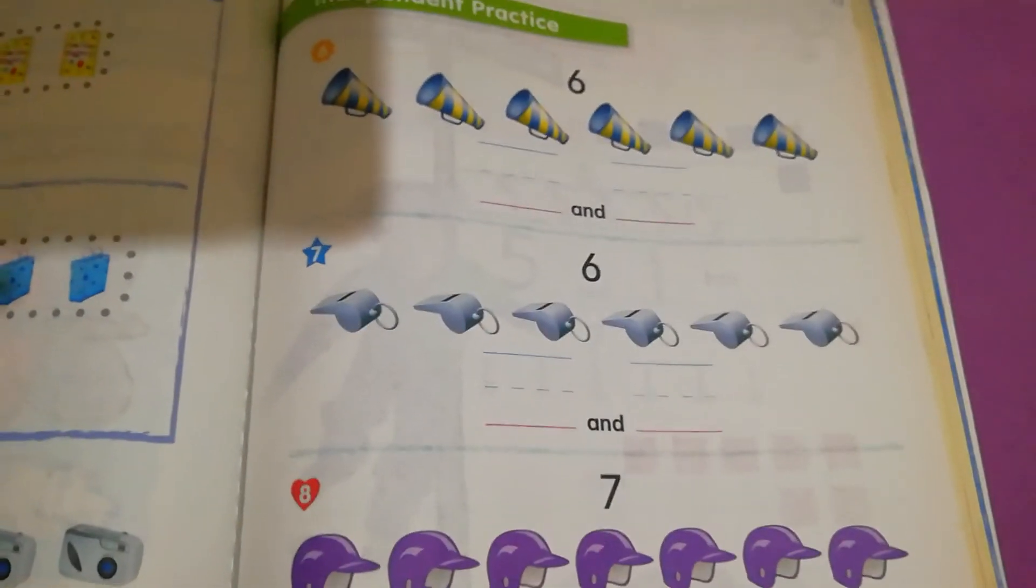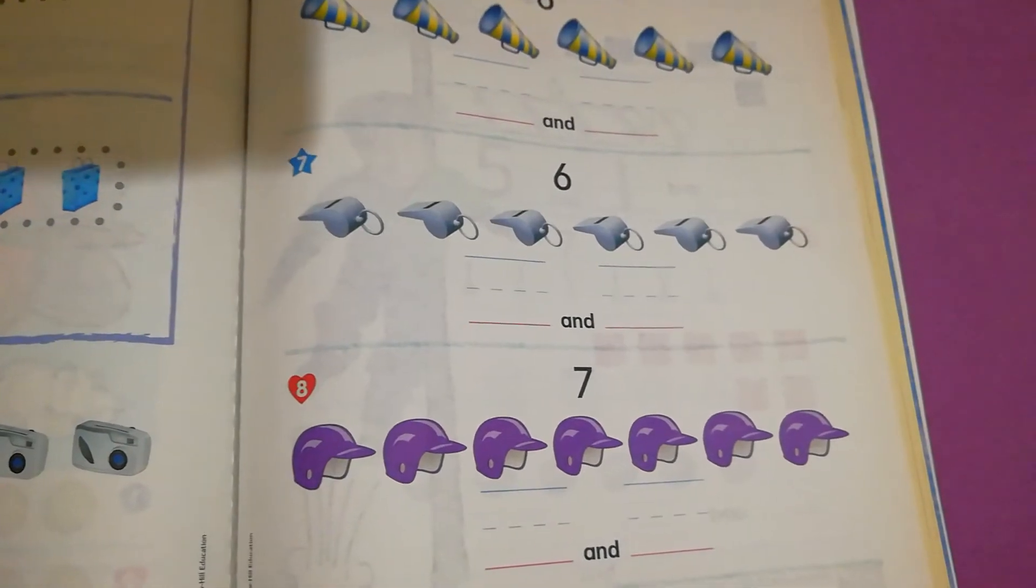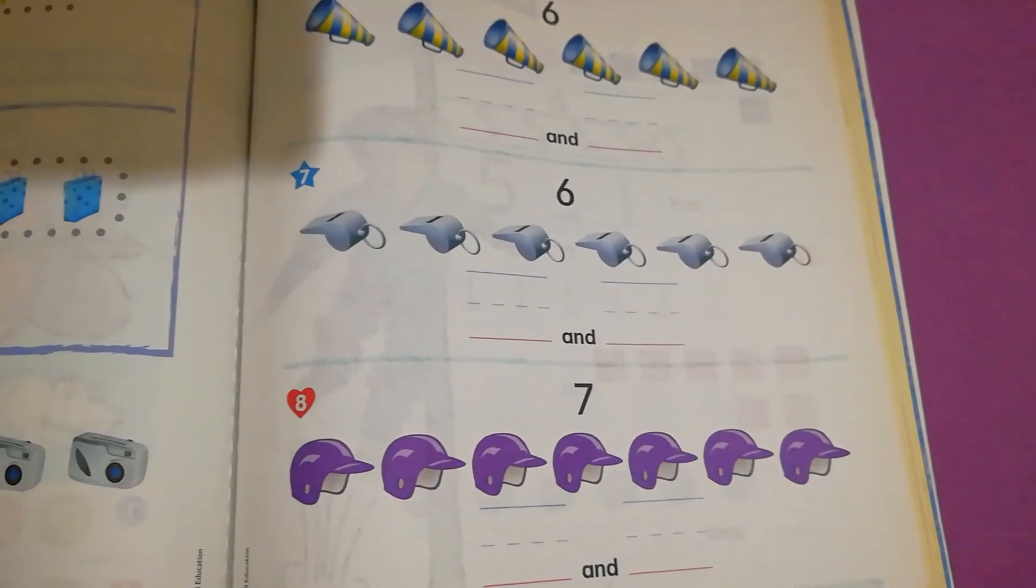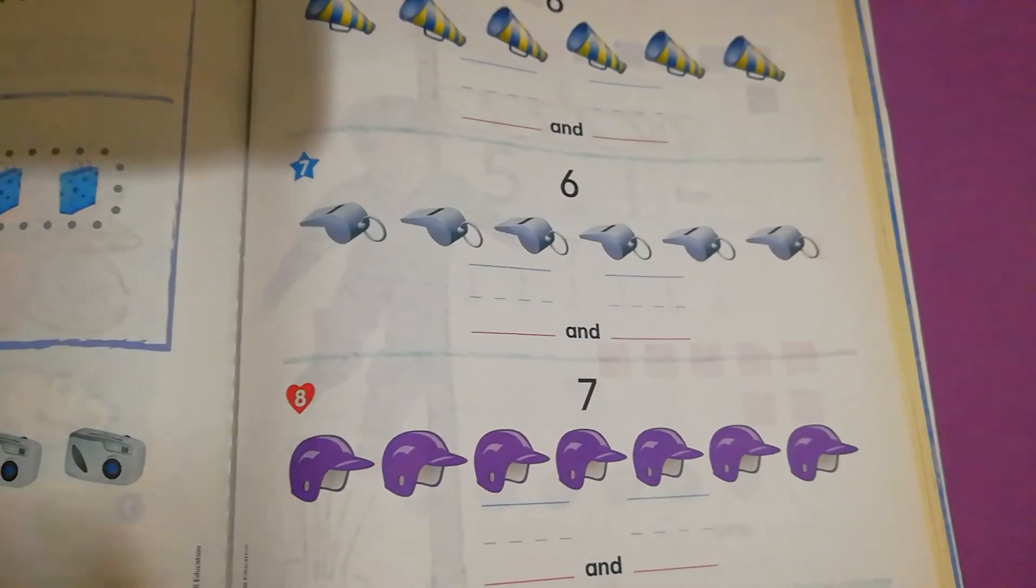Now here, six and seven. This page follows the same directions. We have to count the objects, circle the objects to show a way to take apart six and seven.